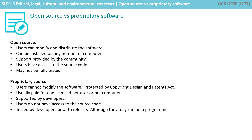Proprietary software is the opposite. It is firmly protected by the Copyright Designs and Patents Act. Users buy a license to use the software, and this usually restricts the number of users or machines that the software can be installed on. The source code will be of commercial interest and is therefore a carefully guarded trade secret.